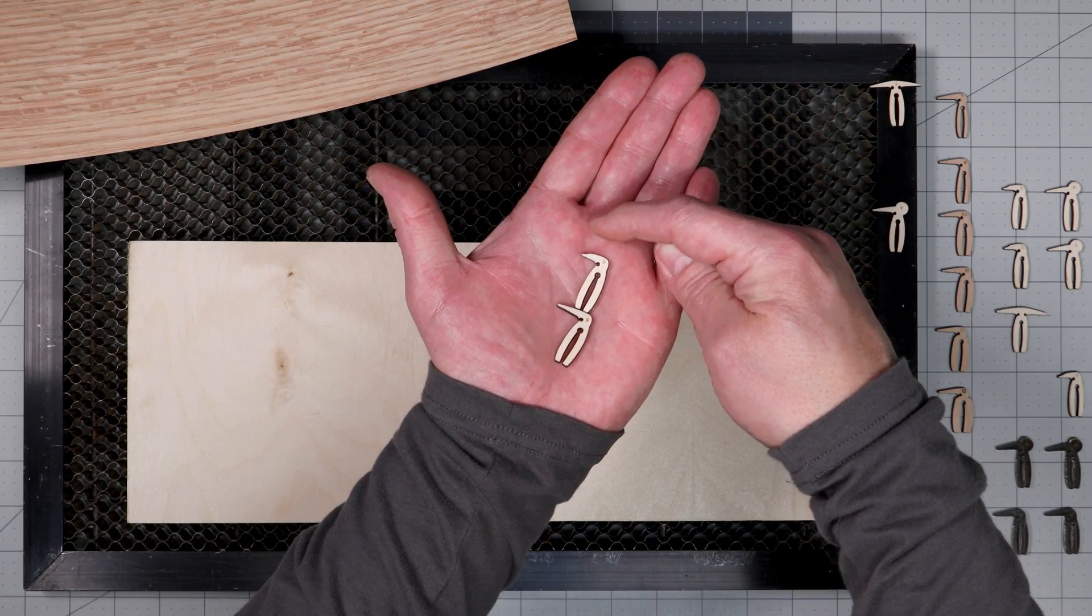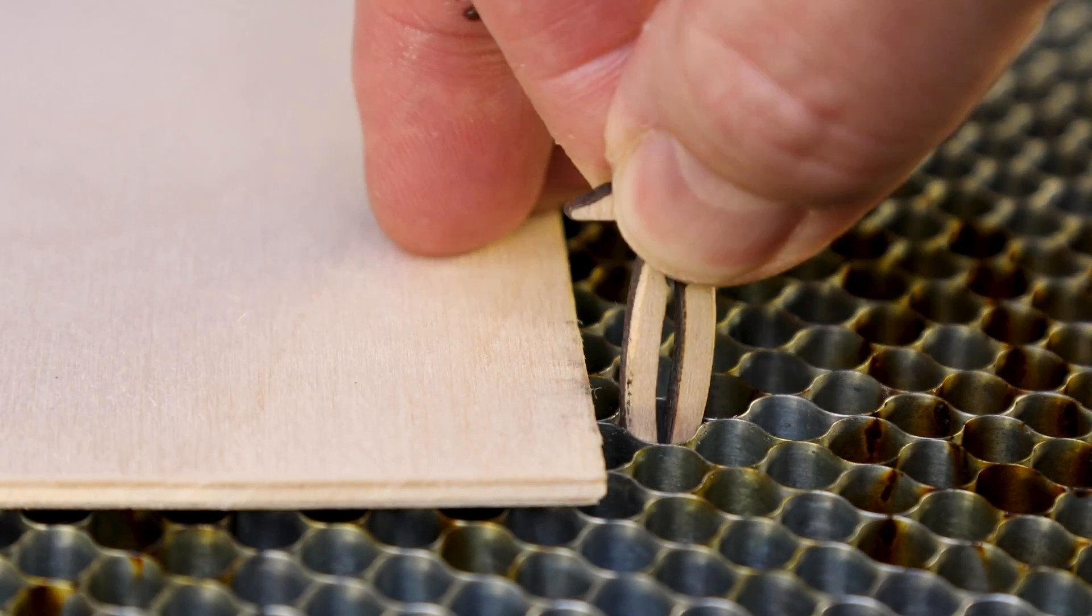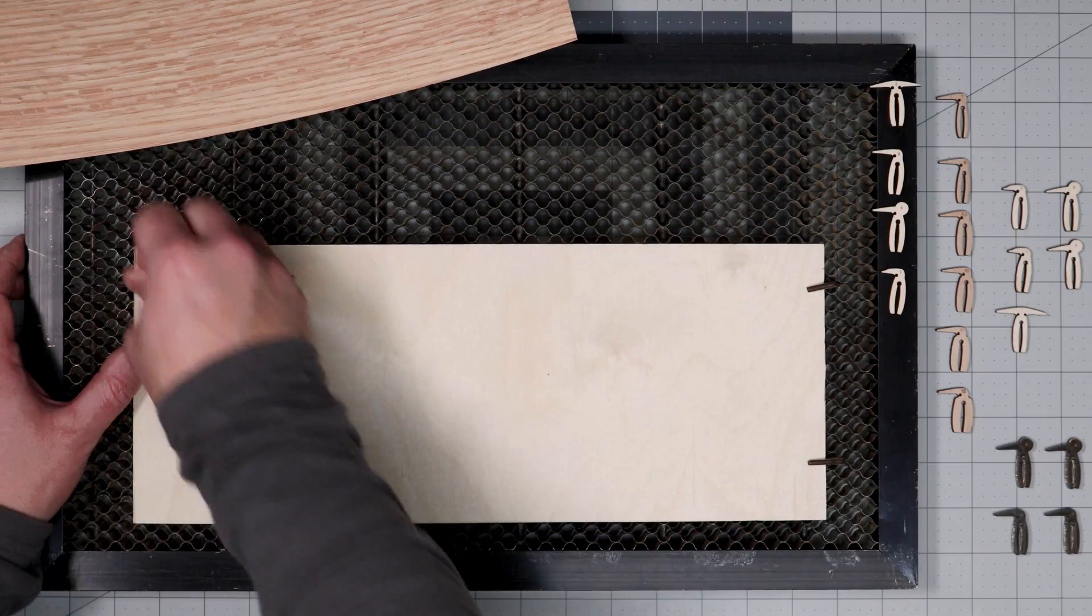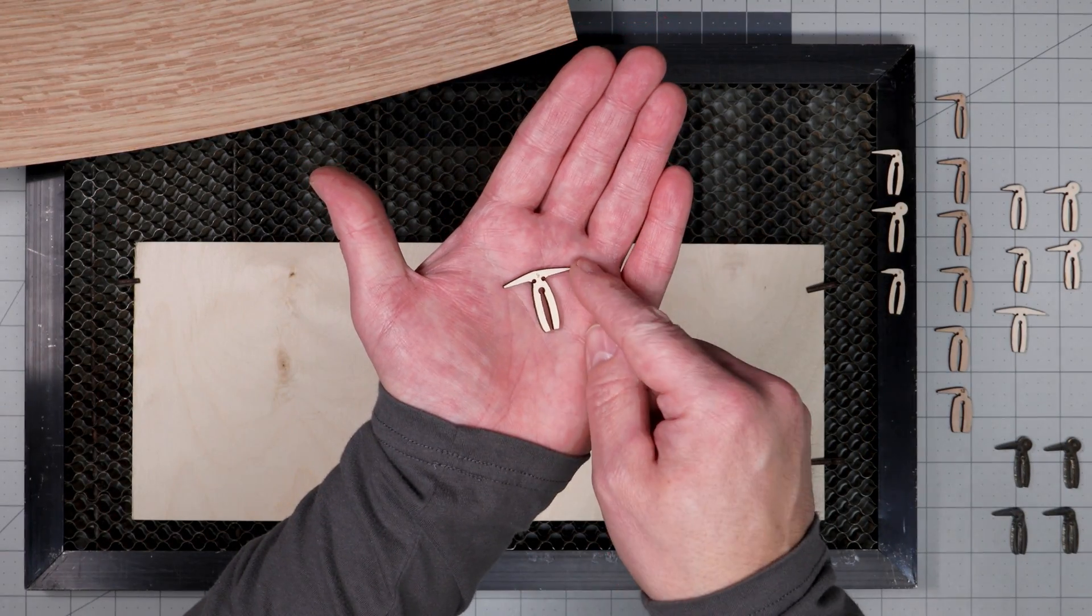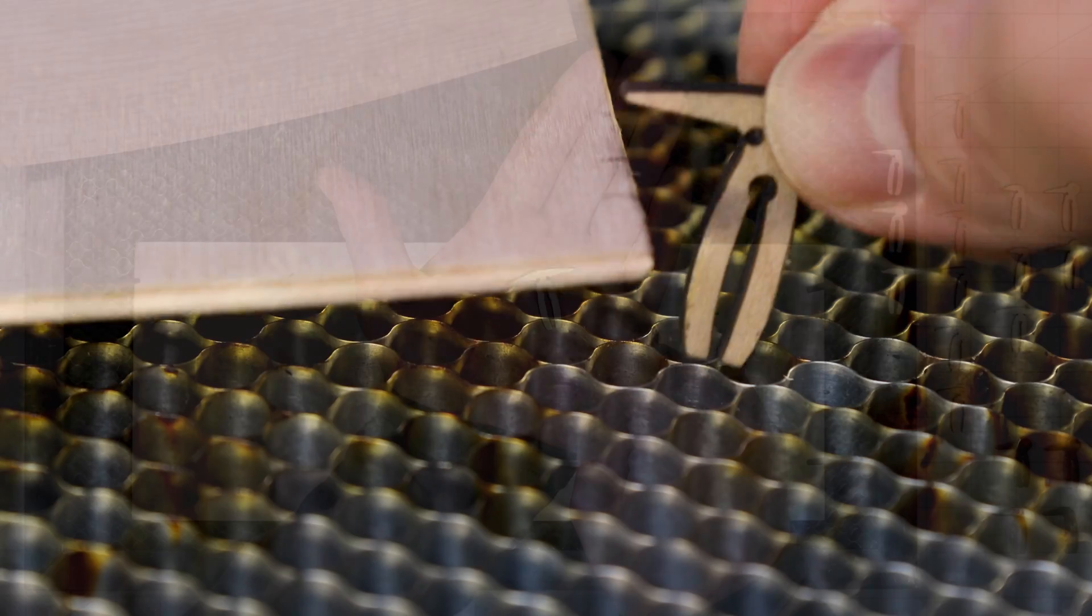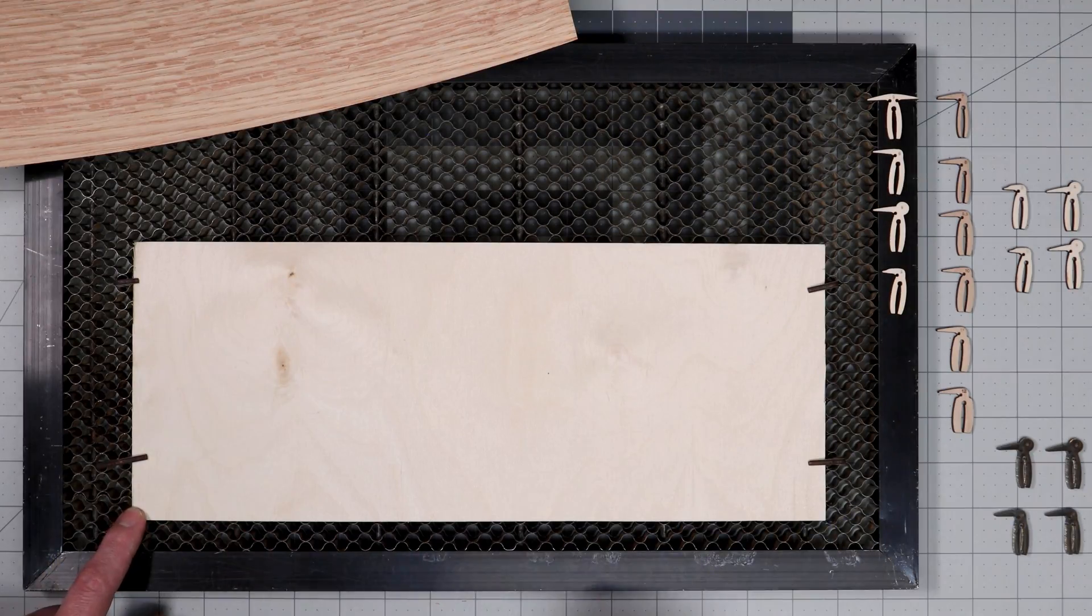Next I have these little stubbies which come in handy if you don't have much border to work with. Next I have this T version which allows you to use both sides of the pin to hold down material.